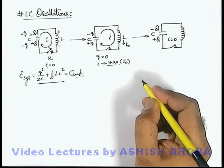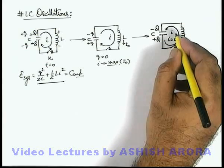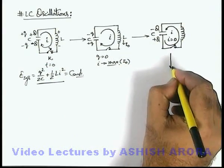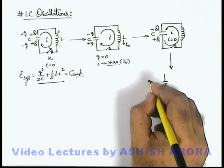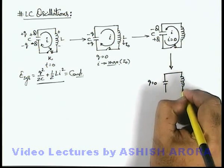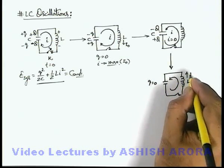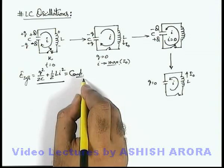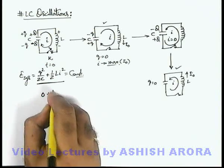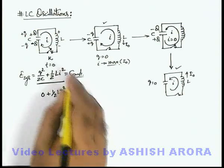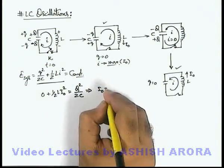Now again, the charge on the capacitor will start discharging in the opposite direction; a current appears and as the current rises, the charge on the capacitor decreases, dropping back to zero after some time. At this point the circuit current is again maximum, reaching the value I₀, but this time in the opposite direction. The energy at this state is: zero (electrostatic) plus half LI₀² equals the total energy, which was initially q² / 2C.